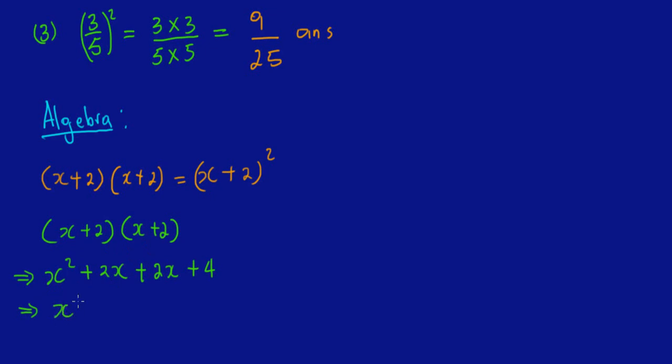Now this, as you can see, is what we call a perfect square because it is the same thing multiplying itself twice. We can therefore conclude that this algebraic expression is a perfect square.